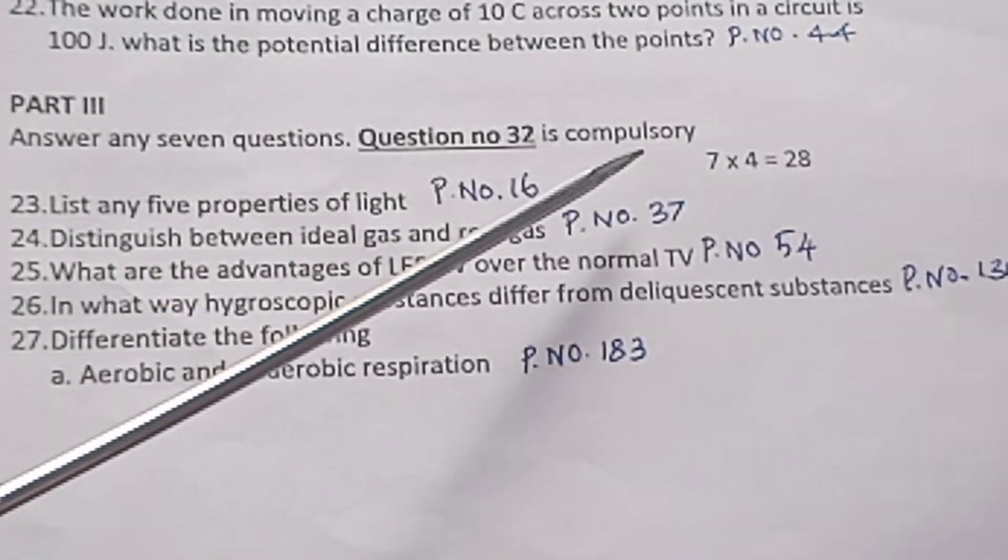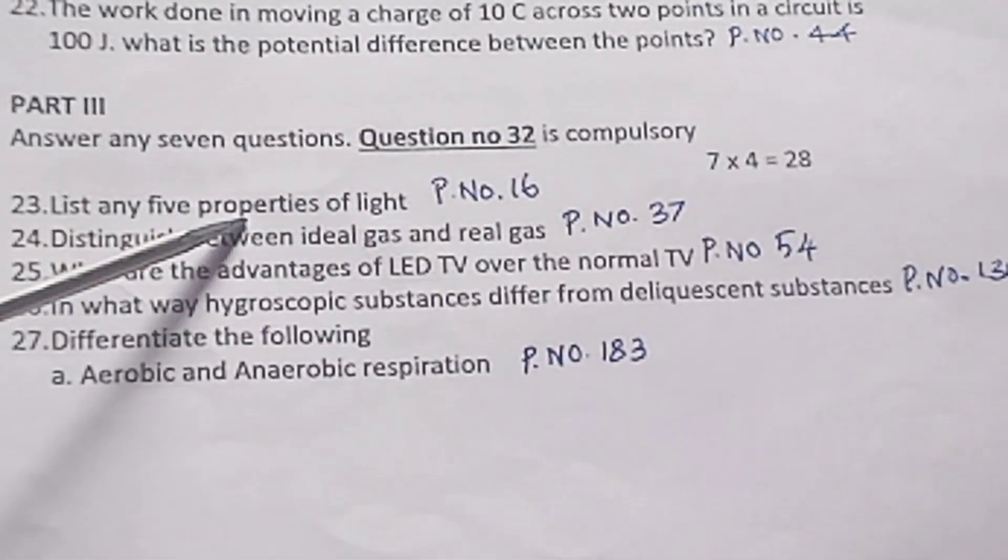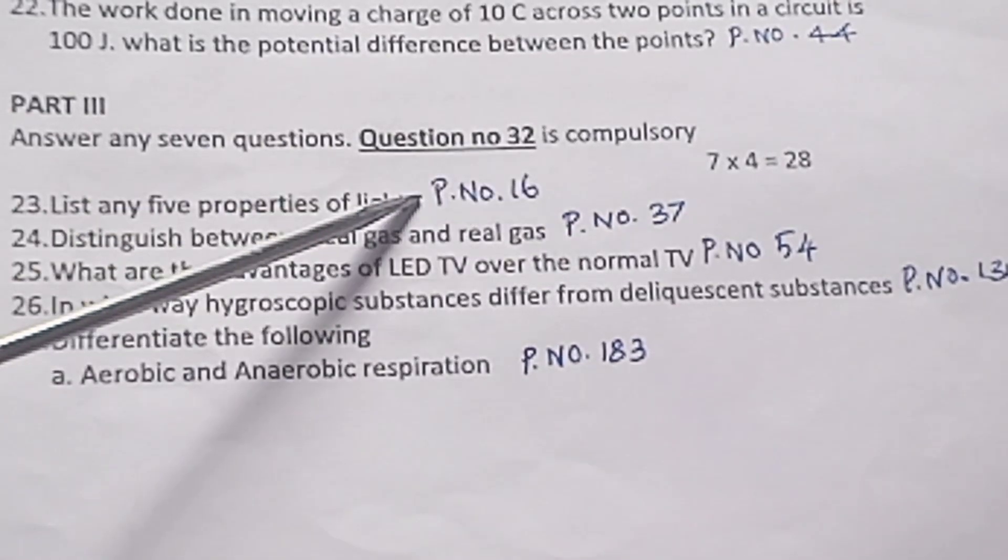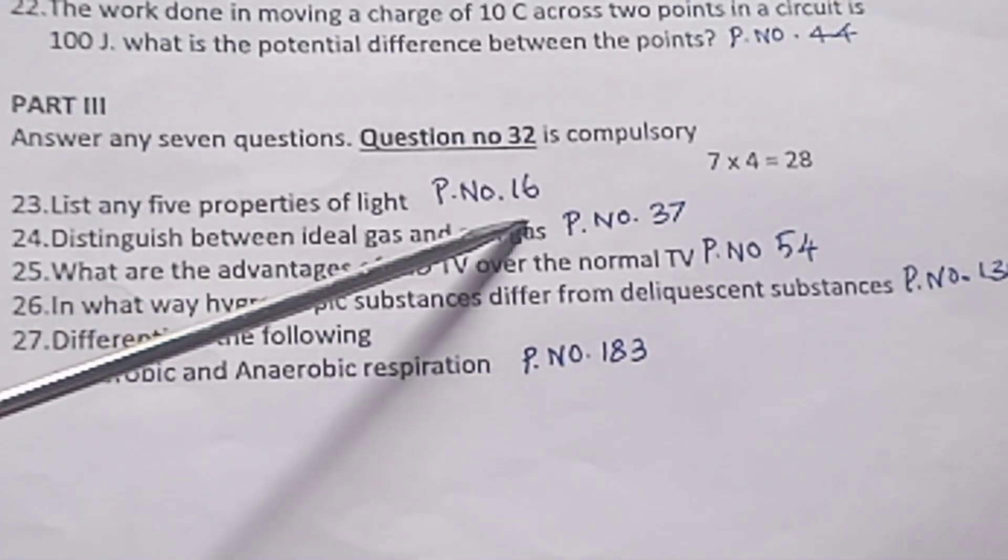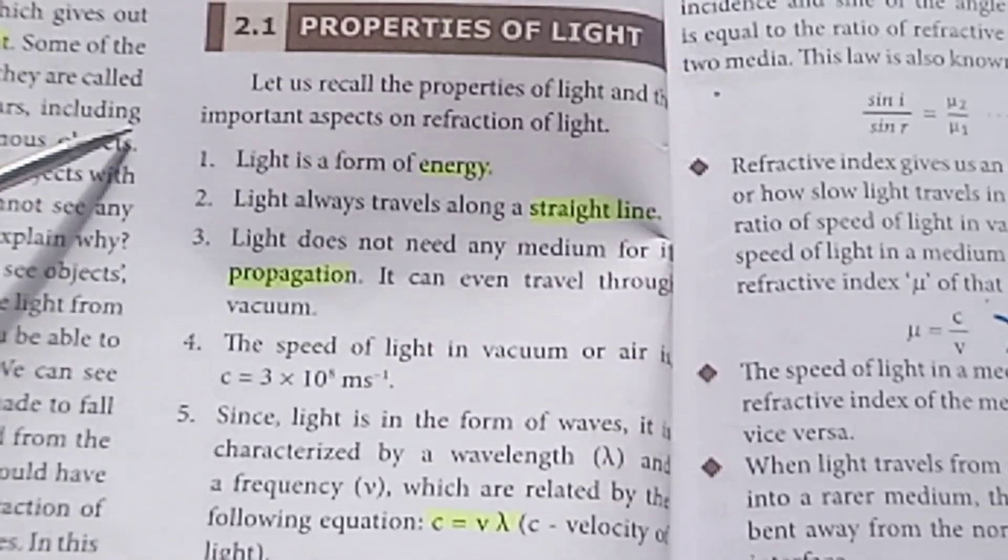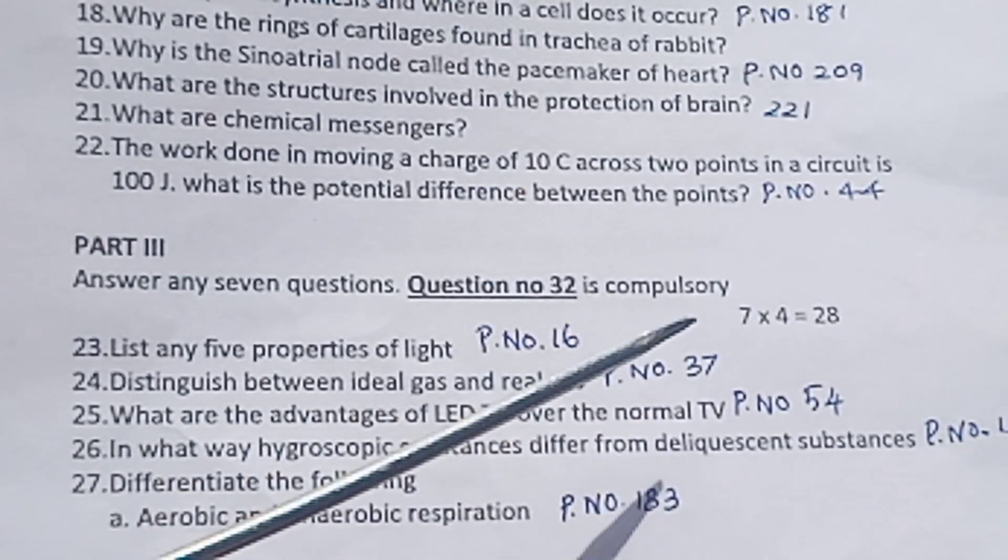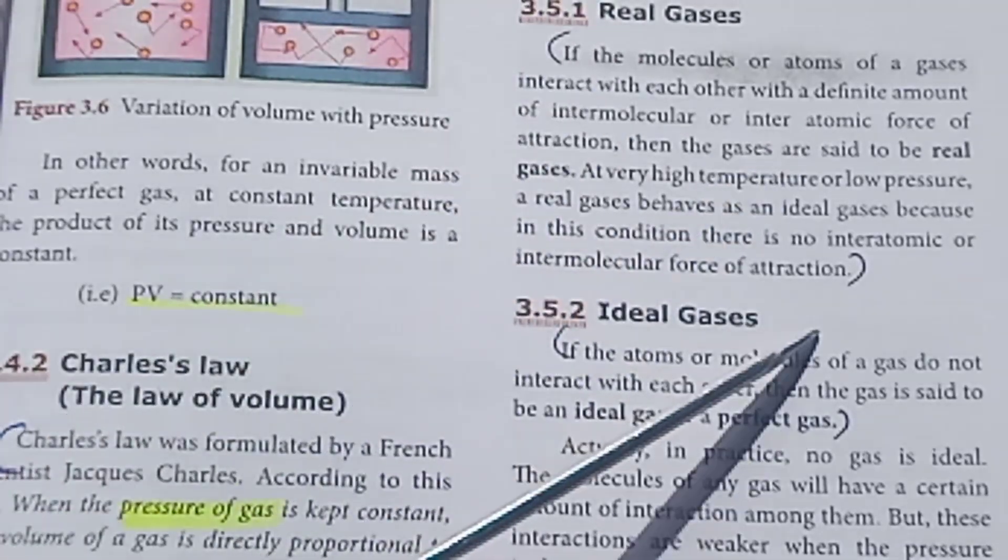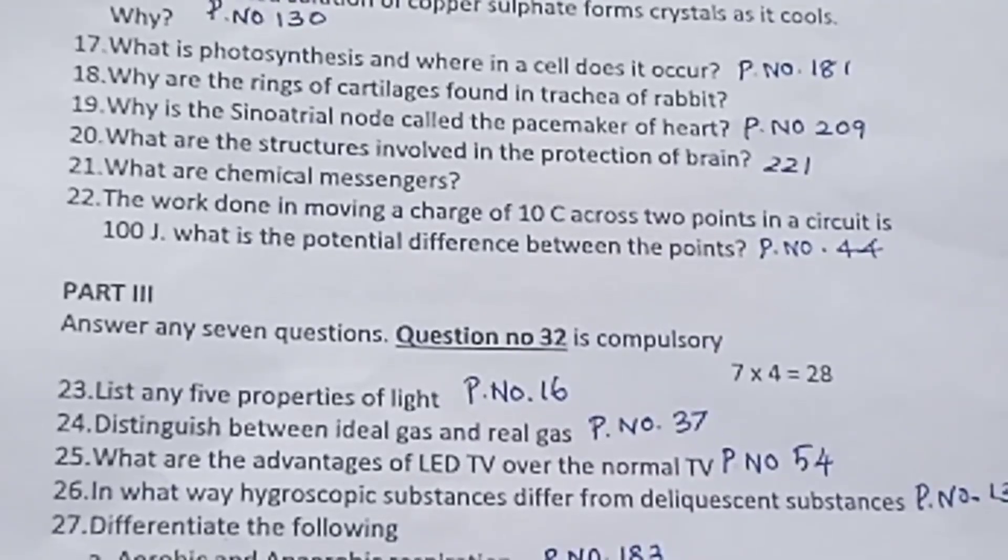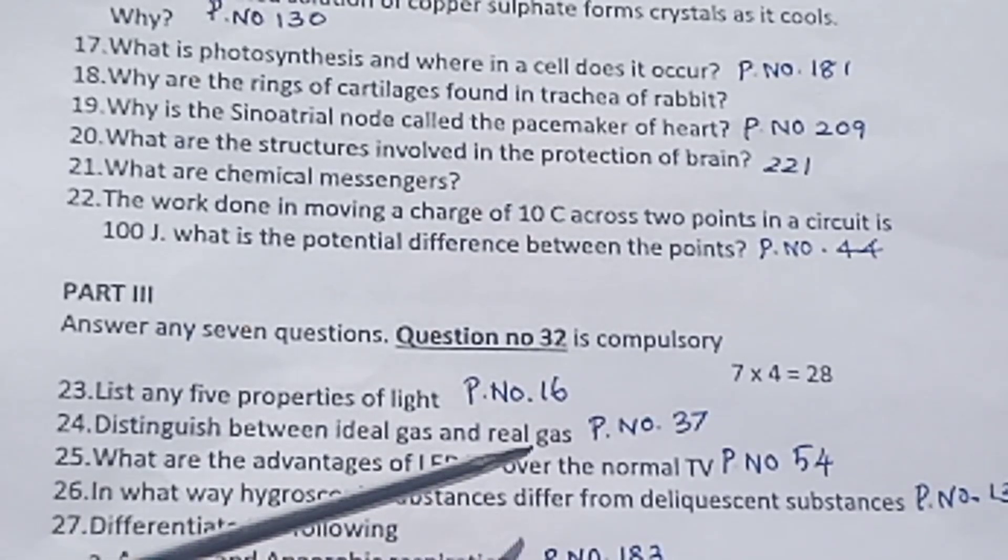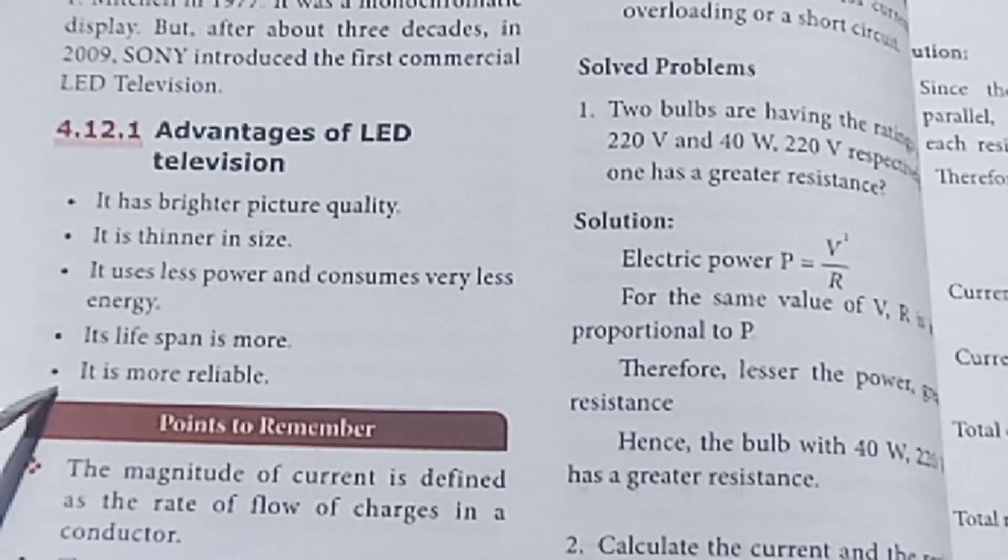Part 3: Answer any 7 questions. Question 32 is compulsory. 7 into 4 = 28. Question 23: List any 5 properties of light. Very important question. May 2022 to August 2022 repeated question. Page number 16. Light is a form of energy. All the 8 points. Question 24: Distinguish between ideal gas and real gas. Page number 37. Real gas and ideal gas. Ideal gases are perfect gases. Tabulation formula. Question 25: Write notes on various advantages of LED TV over normal TV. Page number 54. 5 points.